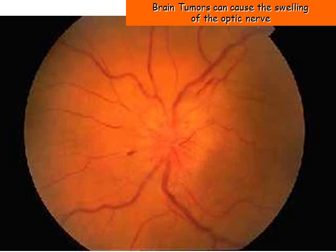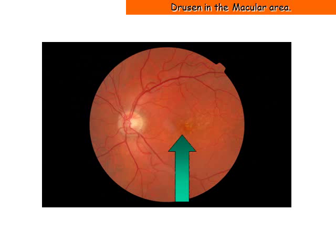Brain tumors can cause the swelling of the optic nerve. In this image of the inside of the eye, we see drusen in the macular area. The macula is the darker red area with the small white spot in the center. This is the tissue that allows you to see 20-20. It is very important to preserve. Drusen may be the beginning of macular changes, macular degeneration.